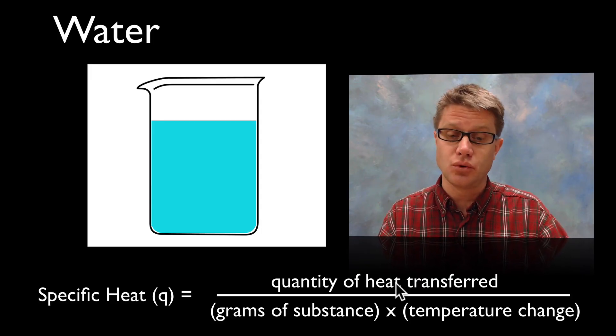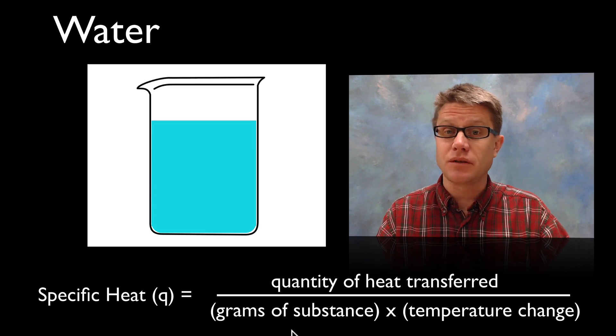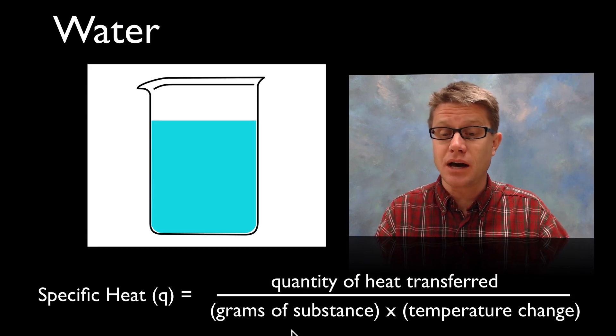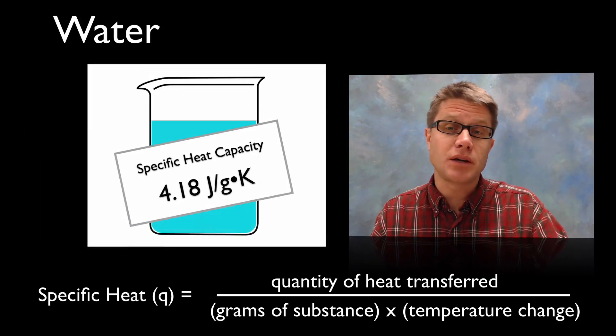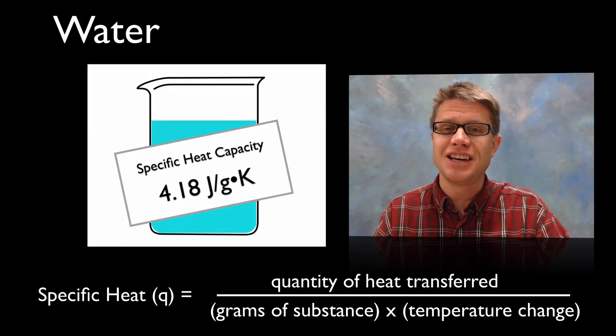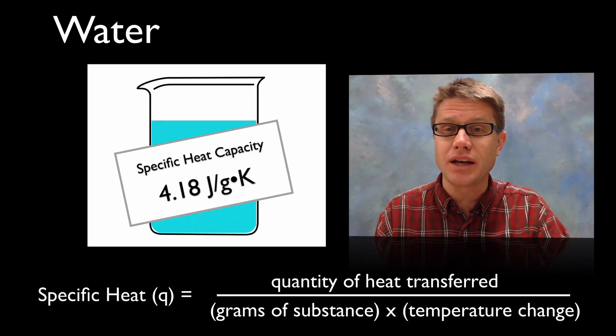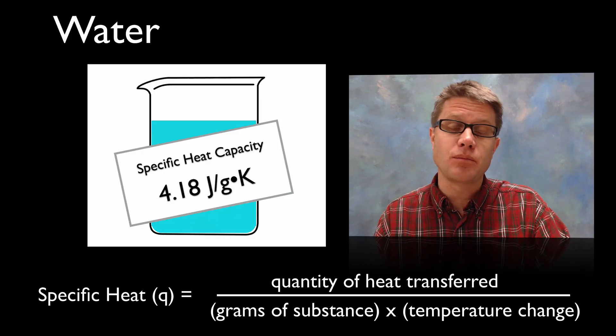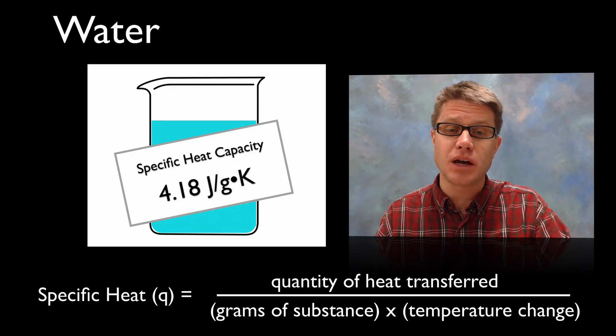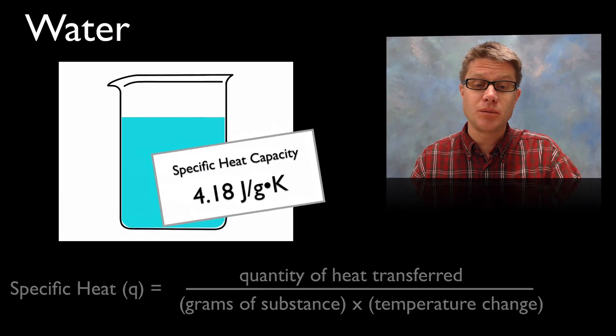And we're going to measure that in joules, divided by the grams of the substance—in other words how much we have—times the temperature change. And so let's give you a real example. Because we know specifically what the specific heat is of water. It's 4.18 joules per gram Kelvin. And that's been well established. It's going to be important that we understand that as we start to do some calculations related to calorimetry.